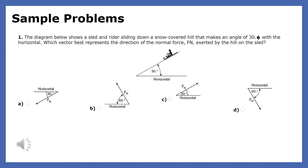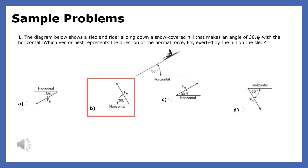The diagram below shows a sled and a rider sliding down a snow-covered hill that makes an angle of 30 degrees with the horizontal. Which vector best represents the direction of the normal force exerted by the hill on the sled? The normal force is always perpendicular to the surface where the two objects meet, so the answer is choice B.